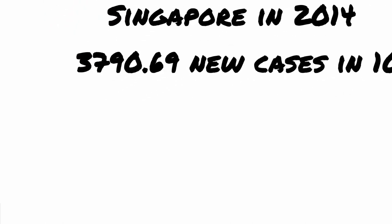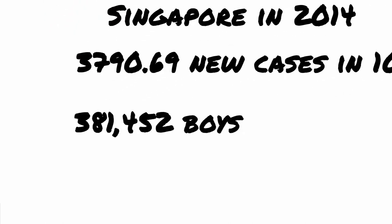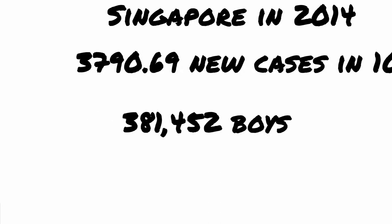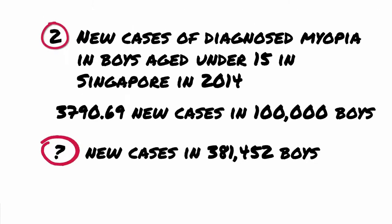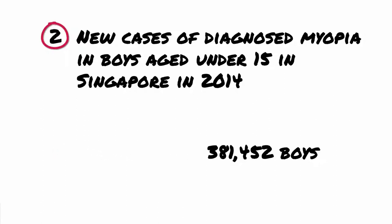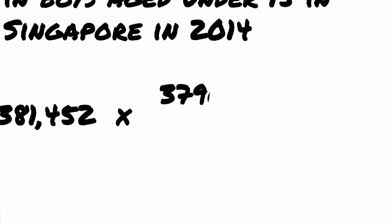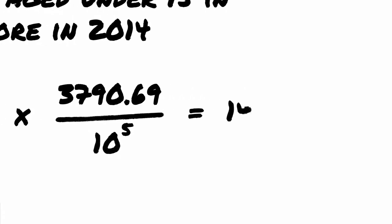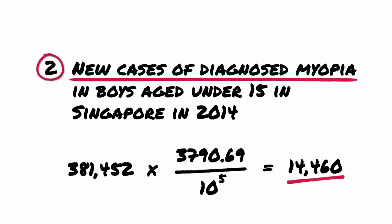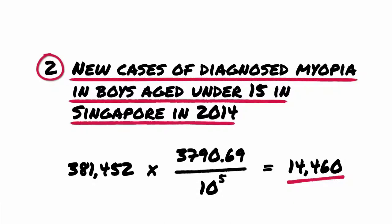And we know that there are 381,452 boys. To calculate the number of new cases, we multiply the number of boys, 381,452, by the exact incidence, 3,790.69 per 100,000. This gives 14,460 new cases of myopia in boys aged under 15 in Singapore in 2014.